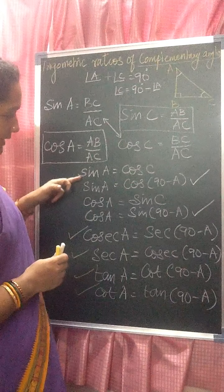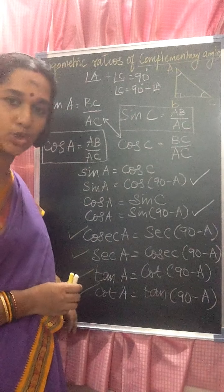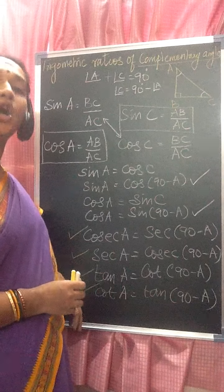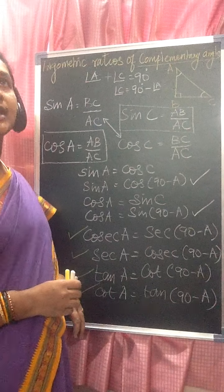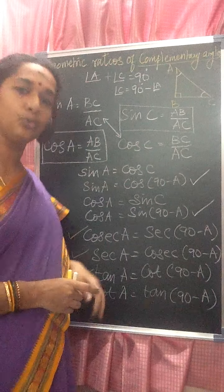So these six are called the trigonometric ratios of complementary angles. Thank you.